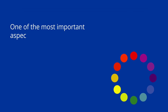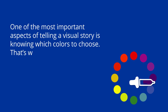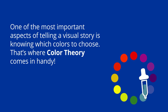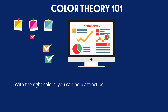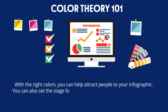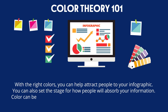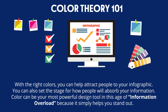One of the most important aspects of telling a visual story is knowing which colors to choose. That's where Color Theory comes in handy. With the right colors you can help attract people to your infographic. You can also set the stage for how people will absorb your information. Color can be your most powerful design tool in this age of information overload because it simply helps you stand out.